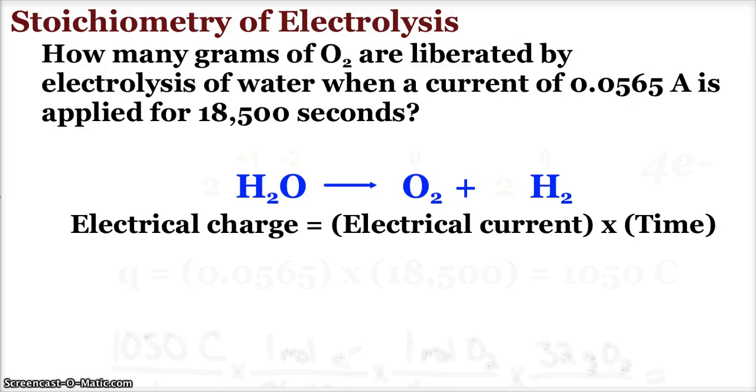Now here's another one: how many grams of oxygen are liberated by the electrolysis of water if we use a 0.0565 amp current and we do that for 18,500 seconds? Basically, when we pass electricity through water, we will break it down—water breaking into oxygen and hydrogen. The first thing you should probably notice is that we need to balance this equation, and I need to know how many electrons are involved in this process. For me, I'm going to look at my oxidation numbers. So in water, hydrogen is +1, oxygen is -2; they're both turning to zeros.